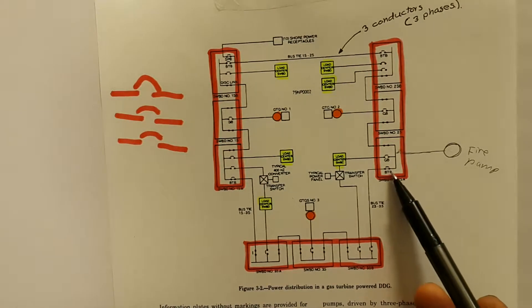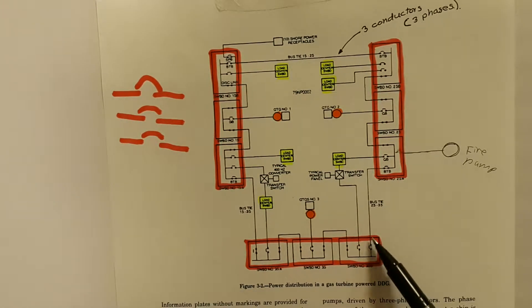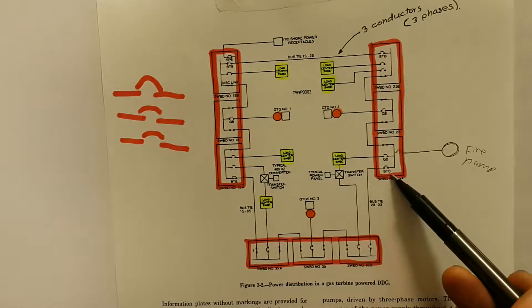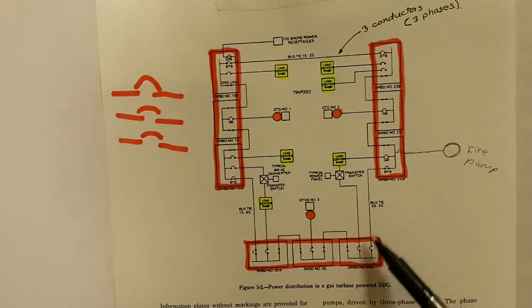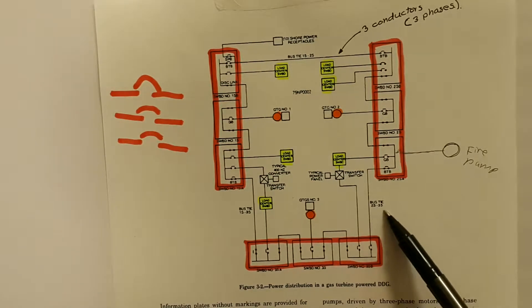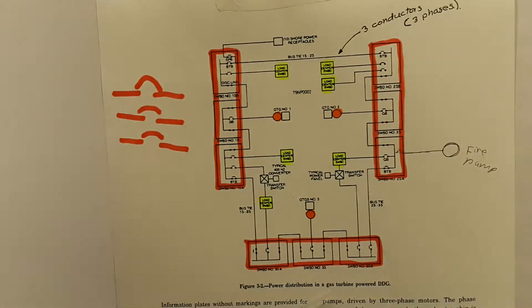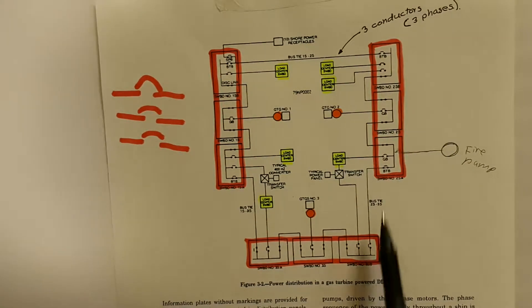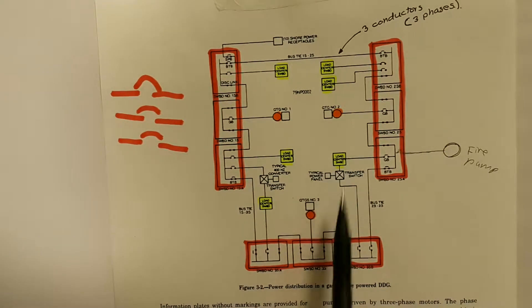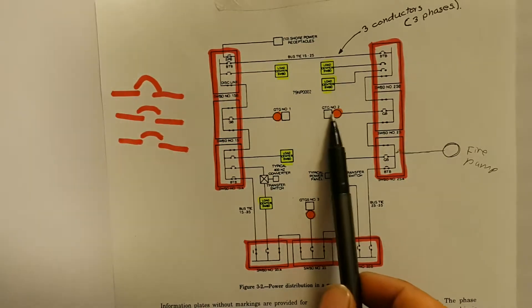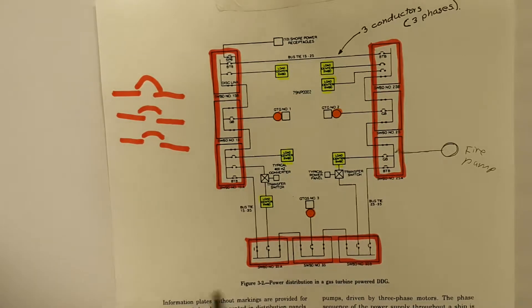This over here, I got a bus tie breaker because this line represents a bus tie. A bus tie is a set of wires or conductors that connect two switchboards. So this bus tie is called 2S, 3S because it connects number two switchboard to number three switchboard. If these two bus tie breakers are closed, it will allow us to power number three switchboard all the way from number two switchboard.